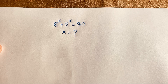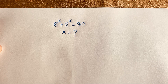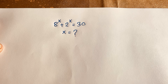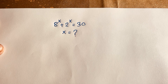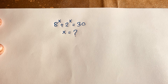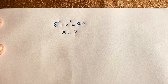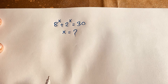Hello everyone. How to solve this maths Olympiad question? It is an exponential equation, also a 9th grade question. The question is: 8 to the power x plus 2 to the power x is equal to 30. x is equal to what? How to solve this interesting maths question? Welcome to Russell's classroom. Let's start.